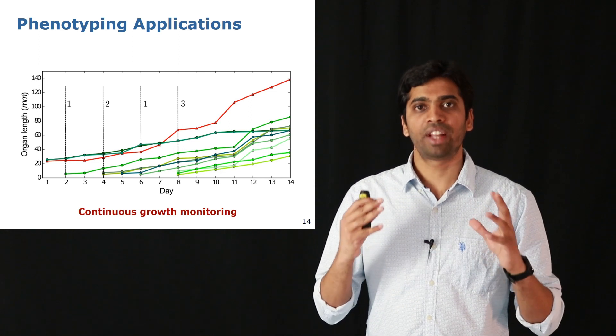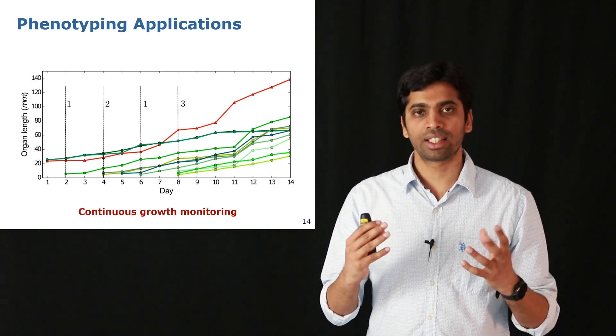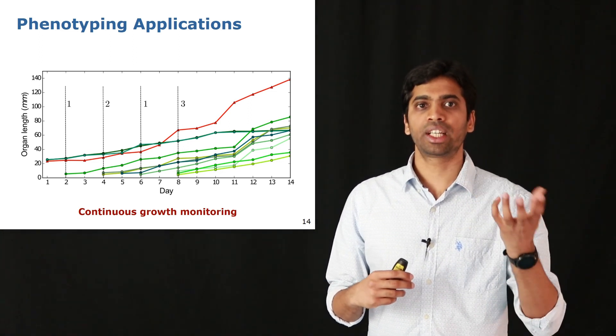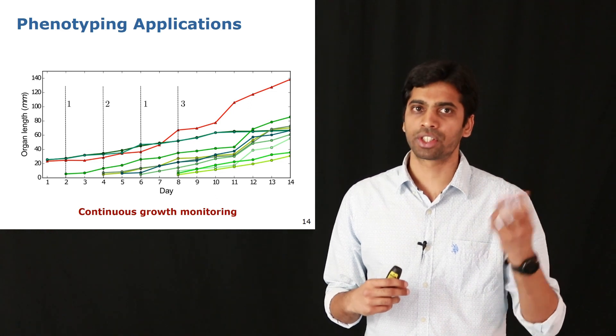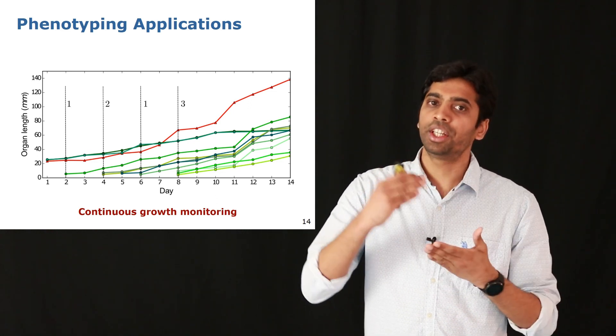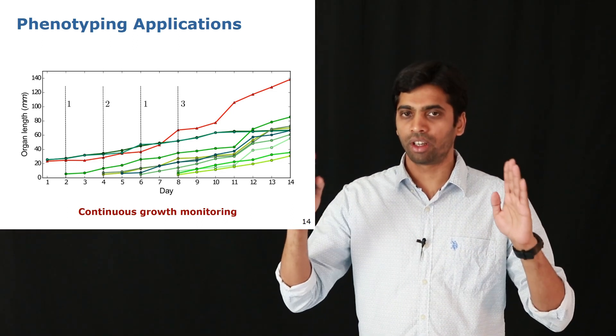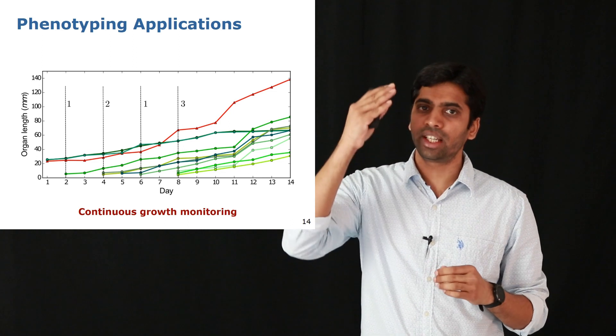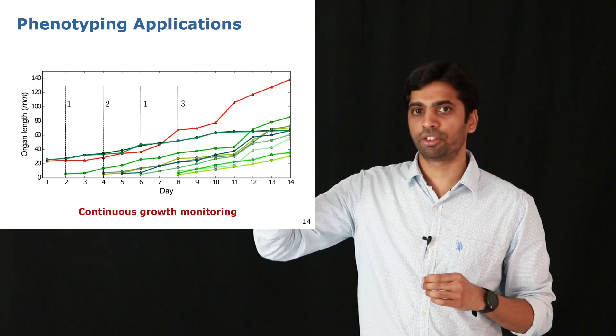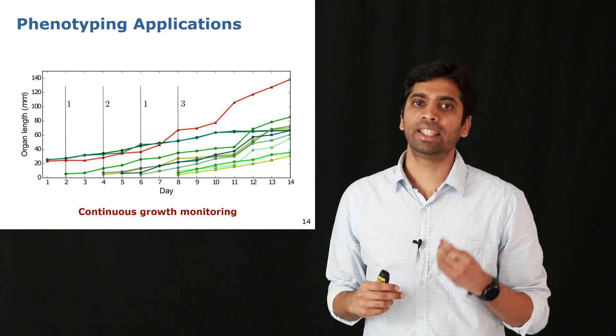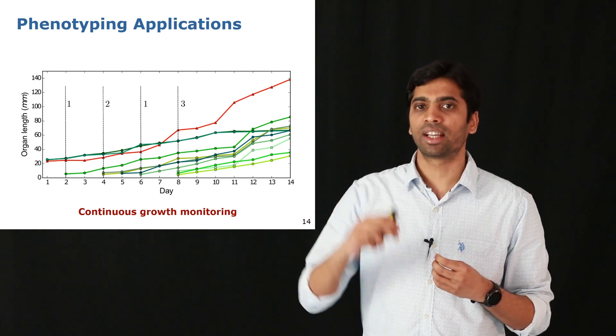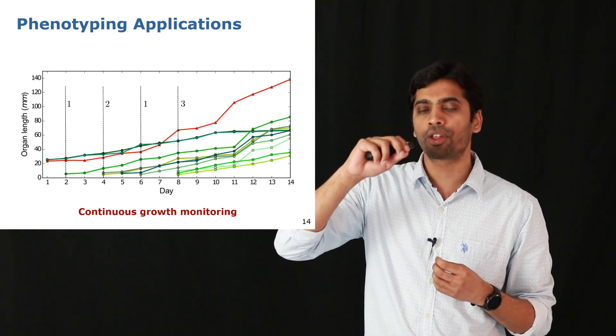Now that we have our registration results, we can demonstrate application of this by continuously monitoring the growth of the plant. We take the data over two weeks and do the registration on consecutive days. What we see here in terms of the green lines is that we are able to track the growth of the leaf.